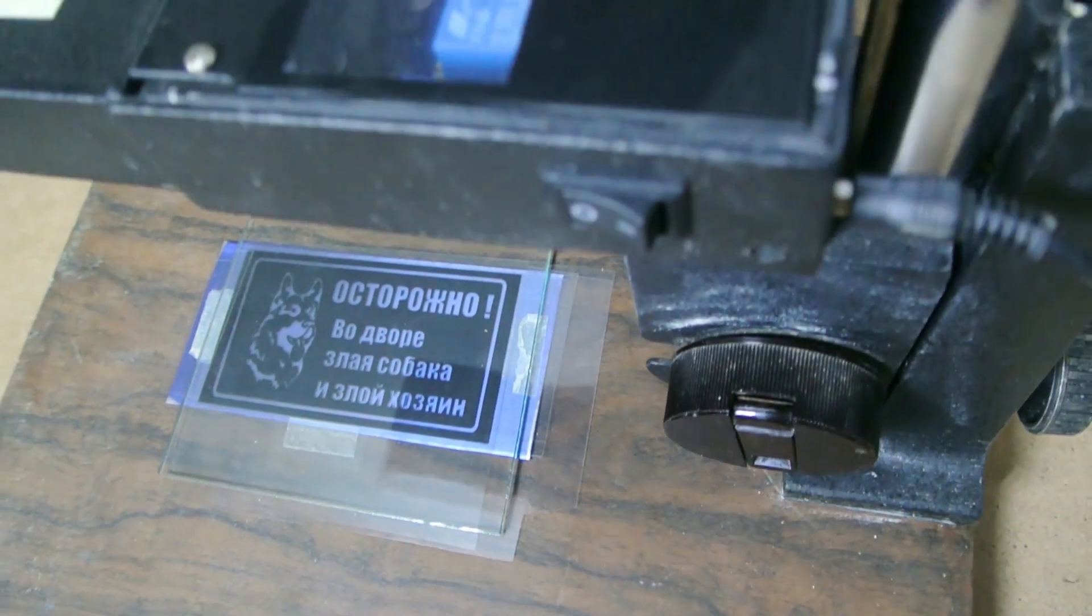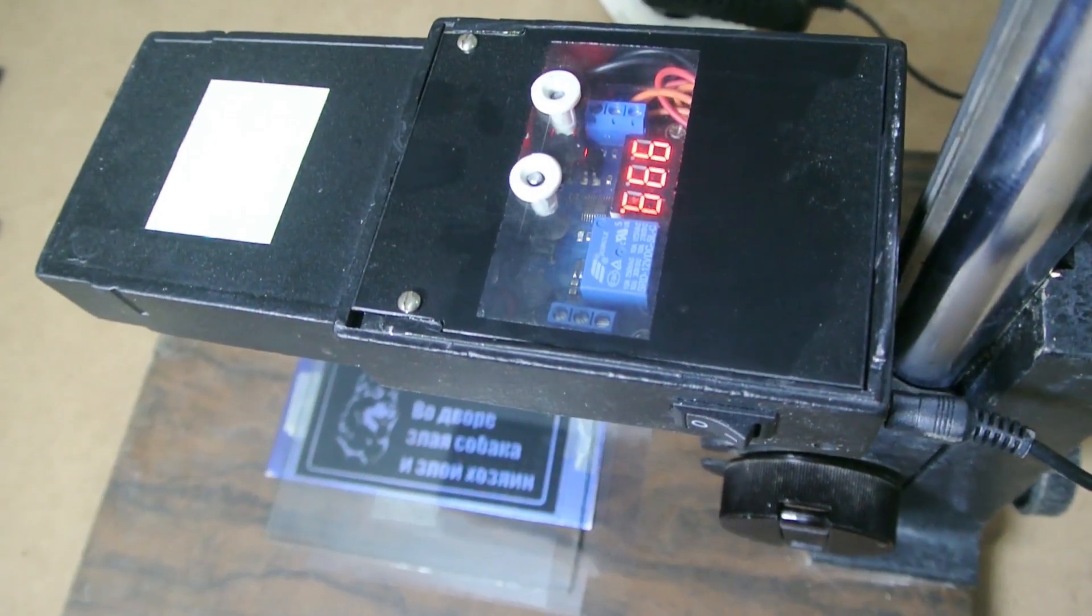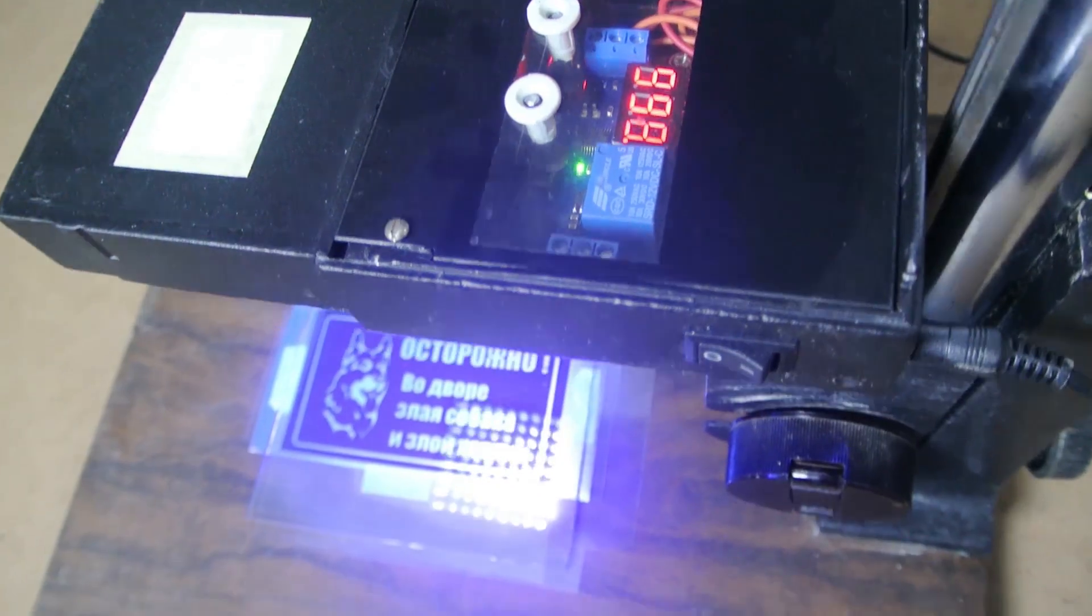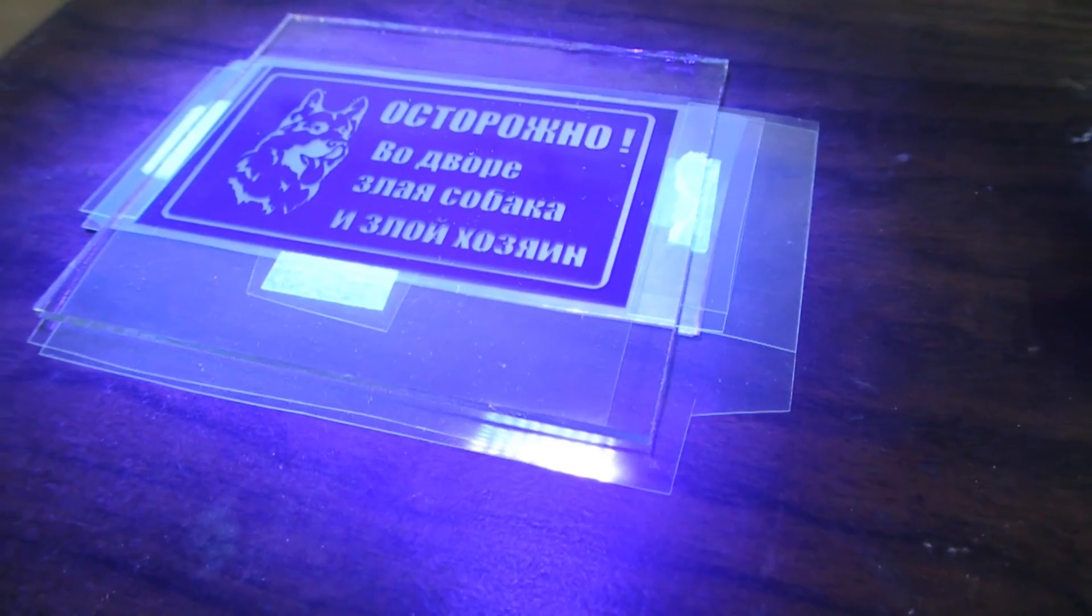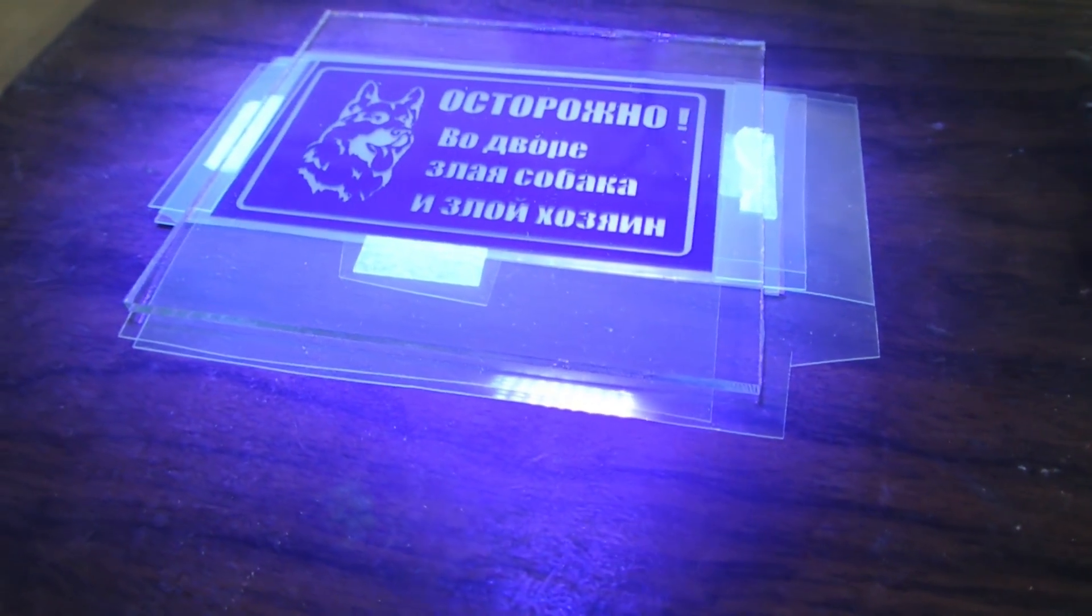Next up we need ultraviolet light. I use a lamp which is made of ultraviolet light-emitting diodes. Also, you can leave the sandwich in the sunny place for a couple of minutes. To understand that the photo resist has already been exposed by its color, you will see that it became darker.